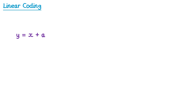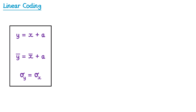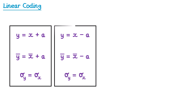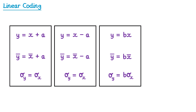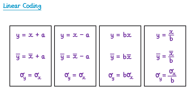Let's summarise all of the points we've covered so far. If we coded data by adding on a value, the coded mean will be the original mean plus this value, but this doesn't affect the standard deviation. If we coded data by subtracting a value, then the coded mean will be the original mean subtract this value, but again the standard deviation will remain the same. However, if we coded data by multiplying by b, the coded mean will be b multiplied by the original mean, and the coded standard deviation will also be b multiplied by the original standard deviation. Similarly if we divide by b, the coded mean will be the original mean divided by b, and the coded standard deviation will be the original standard deviation divided by b. So adding or subtracting affects the mean but not the standard deviation, while multiplying and dividing affects both.